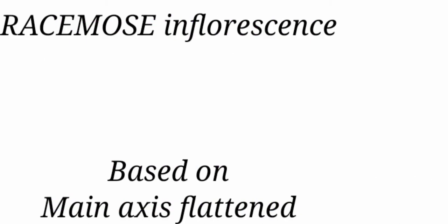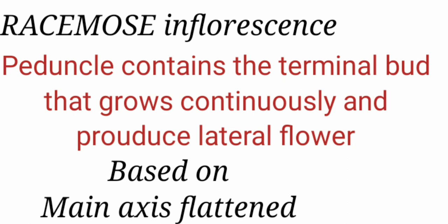In this video as I said before we are going to see about the Racemose inflorescence particularly based on the flattened main axis. Racemose has the central axis that is called peduncle which poses the terminal bud which has the capacity or capability to grow continuously and produces the lateral flowers and that is called as Racemose inflorescence.